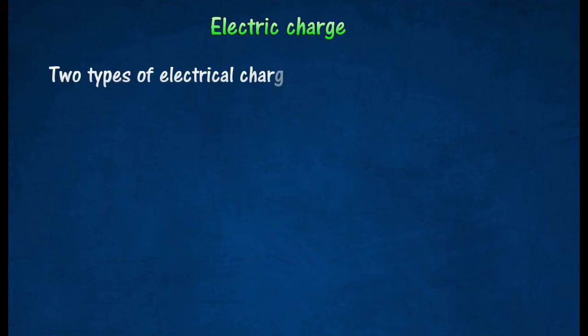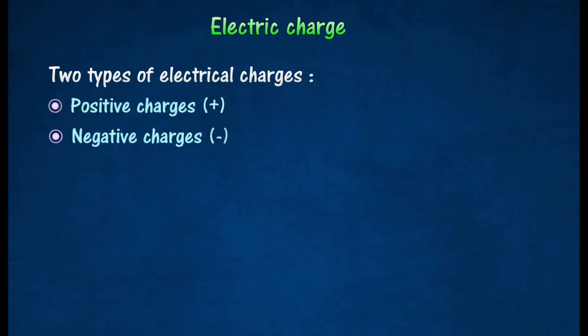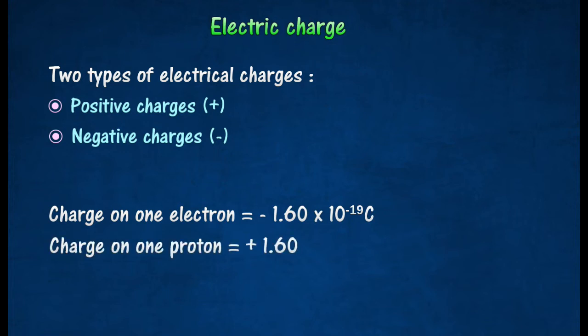There are two types of electrical charges, positive and negative. An electron has an equal negative charge. A proton has a positive charge. A body is neutral if the number of positive and negative charges are the same.